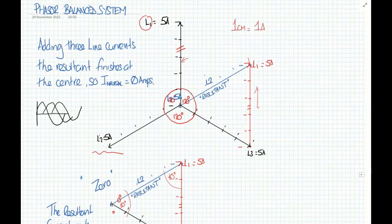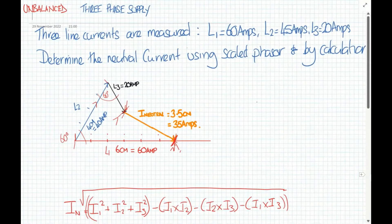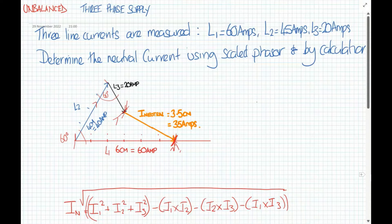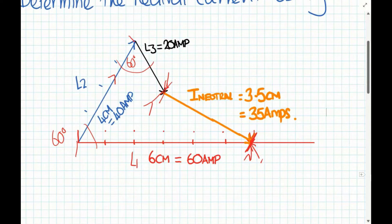What happens if we get a scenario where they're out of balance? If we look at an unbalanced three-phase supply, this time we've got L1 at 60, L2 at 45 and L3 at 20. Determine the neutral current using a scalar phasor. We'll start with the phasor first. The first line current L1, 60 amps or six centimeters. We draw six centimeters to the end here. We then add L2 at 60 degrees. There's our 60 degree angle and L2 is 4 centimeters, that's 40 amps. At the end of L2 we add L3 which is two centimeters, 20 amps at 60 degrees to there.